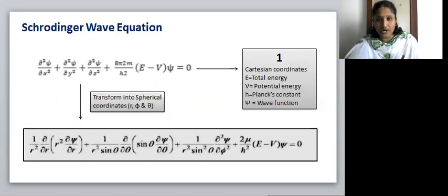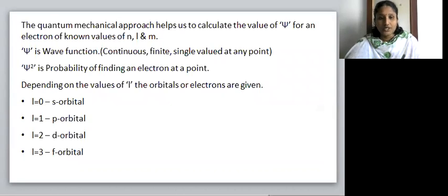This Cartesian coordinate form of Schrödinger wave equation can be transformed into spherical coordinates. The solutions of Schrödinger wave equation obtained in terms of expression for R, θ, ψ are acceptable only if they follow the restrictions of quantum numbers n, l, and m.